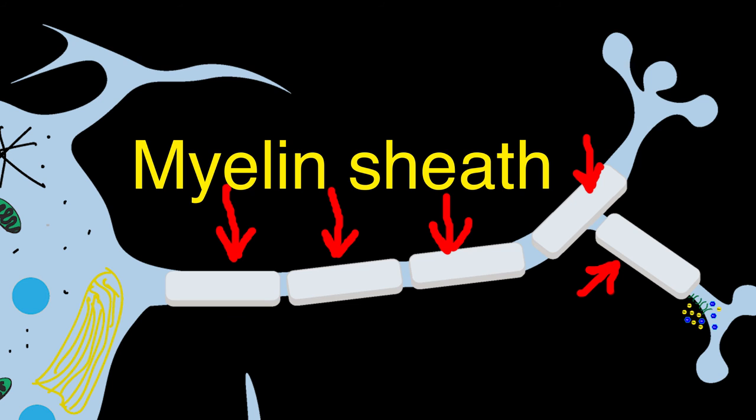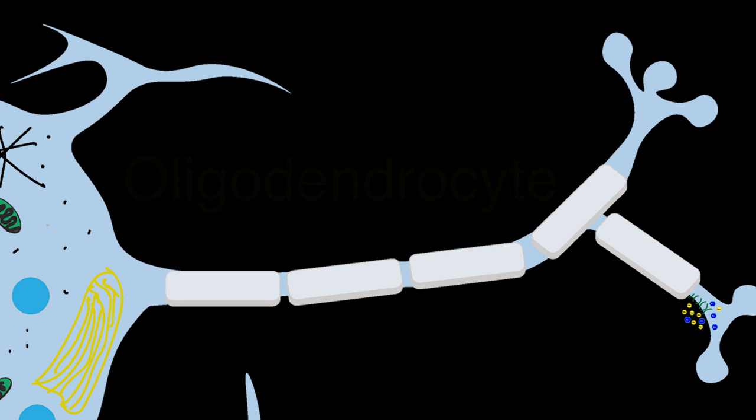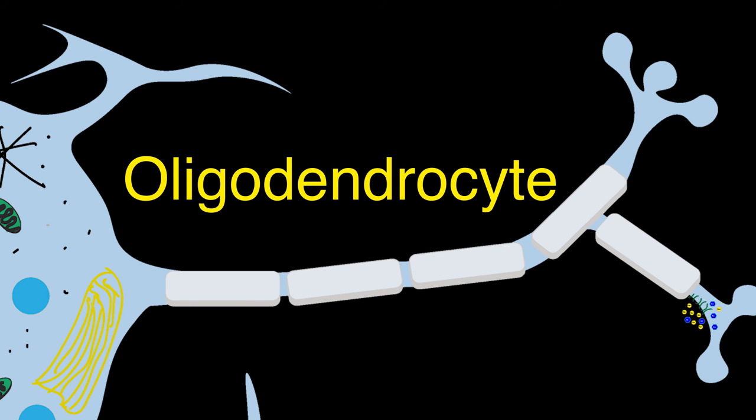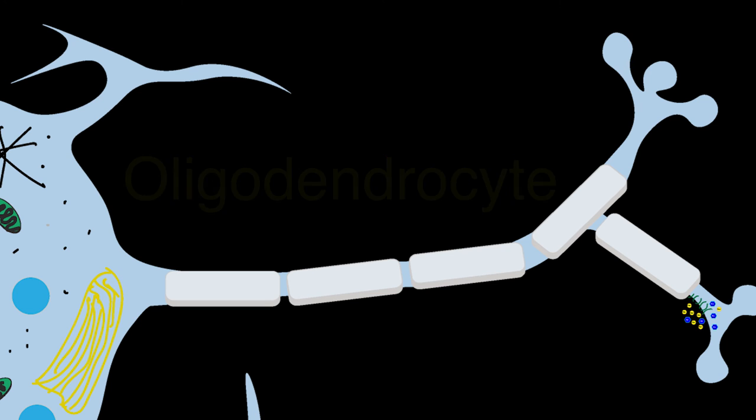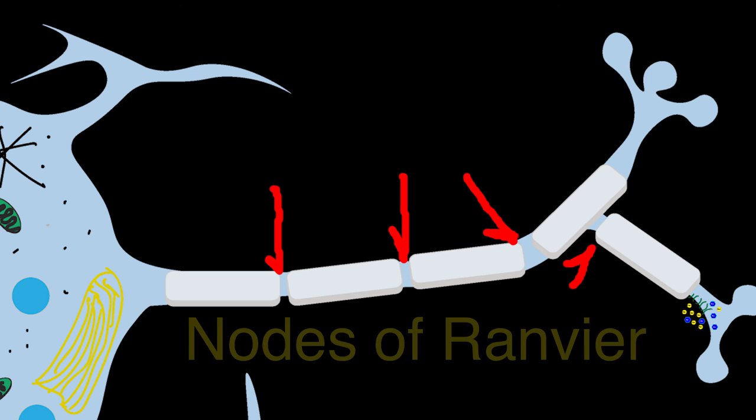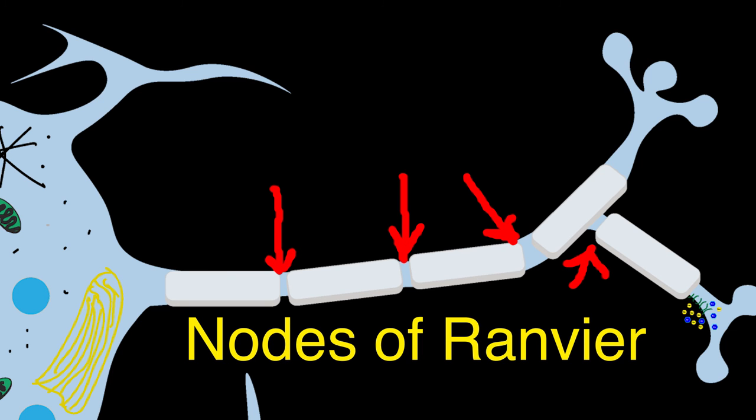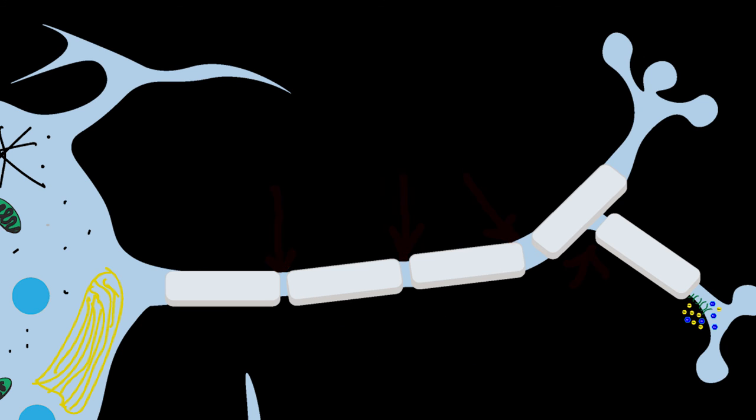For cells in the central nervous system, the myelin sheath is manufactured by a special type of cell called an oligodendrocyte. The myelin sheath does not cover the whole axon. Rather, it consists of segments that are about a millimeter long that are separated by small gaps. These gaps are called the nodes of Ranvier. Myelin sheaths on the cells in the peripheral nervous system are manufactured by different cells called Schwann cells.